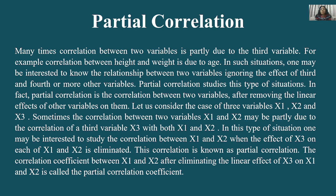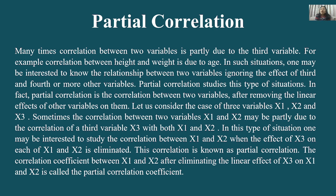Let us consider the case of three variables: x1, x2, and x3. Sometimes the correlation between two variables x1 and x2 may be partly due to the correlation of a third variable x3 with both x1 and x2. In this type of situation, one may be interested to study the correlation between x1 and x2 when the effect of x3 on each of x1 and x2 is eliminated. This correlation is known as partial correlation.